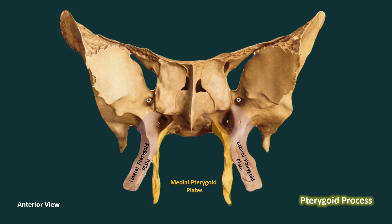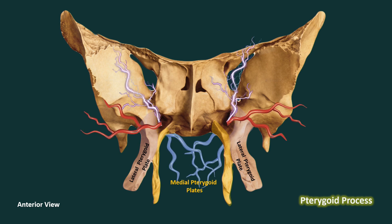The pterygoid canal runs through the pterygoid process and transmits the nerve, artery, and vein. This concludes our discussion of the lesser and greater wings of the sphenoid bone and the pterygoid process. Next we'll move forward to the muscular attachments and ligaments of the sphenoid bone.